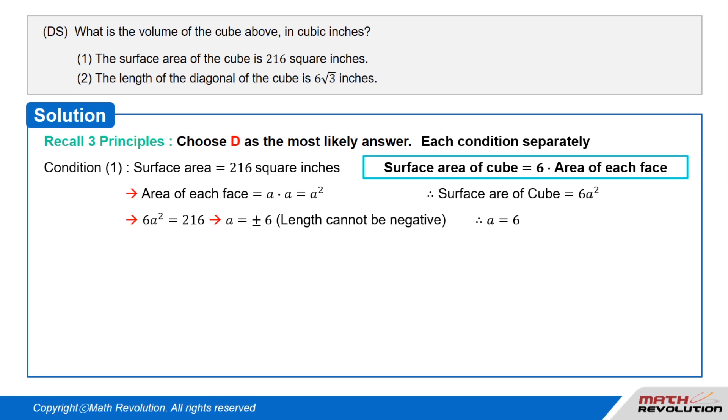So, A equals plus minus 6. But the length cannot be negative, so A must equal 6. The volume of cube equals A cubed equals 6 cubed, or 216. This solution is unique, so condition 1 is sufficient.